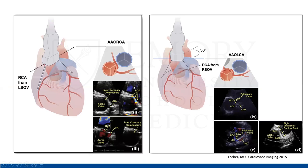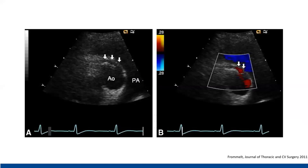Here is an example of an anomalous right with echo. In parasternal short axis tilted up, we see what looks like another artery anteriorly from the left cusp. With addition of color Doppler, we can confirm this is an anomalous right off the left. You are limited in further evaluation of the more distal artery, but you can definitely see the anomalous origin. Here also is an anomalous left — with color you can see the LAD and the possible intramural course. An anomalous right off the left is also well-demonstrated with another clear picture with color confirmation.